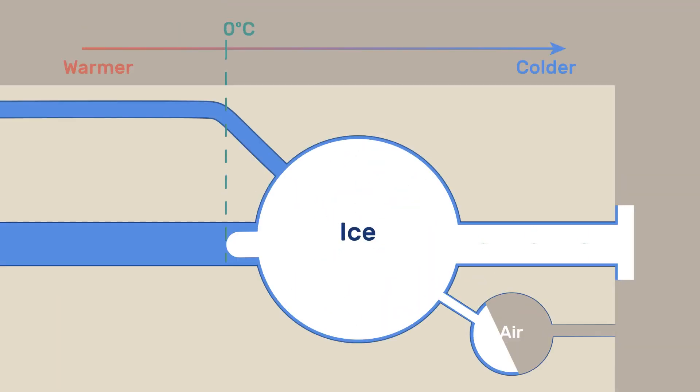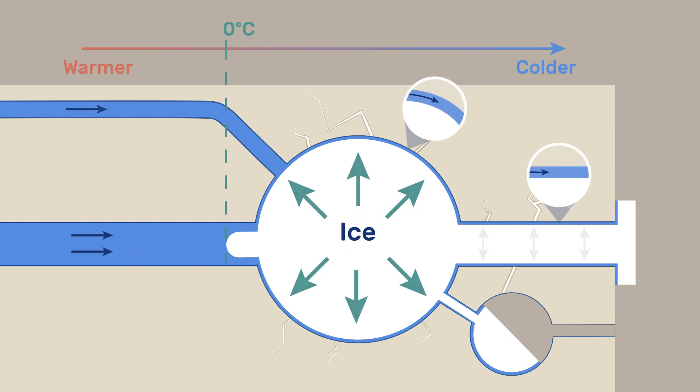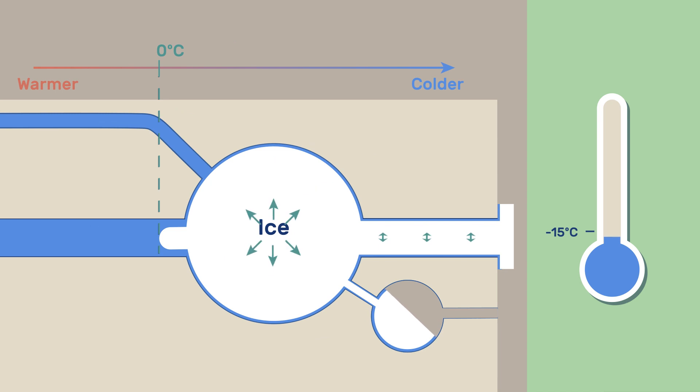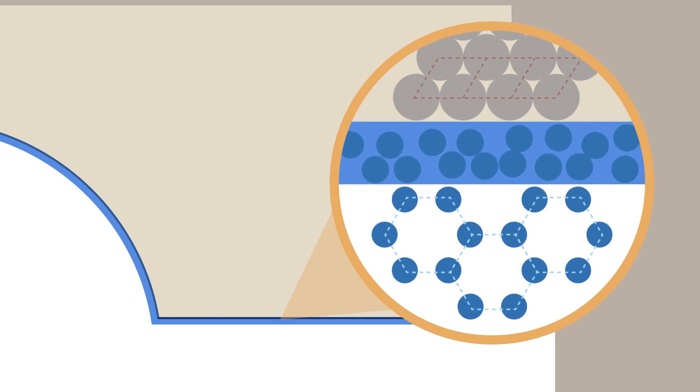Therefore, as long as flow from the warmer zone persists, the cracks will gradually lengthen. However, if the temperature becomes very low, say below minus 15 degrees Celsius, the mobility of water molecules in the film may be so low that further growth is inhibited.